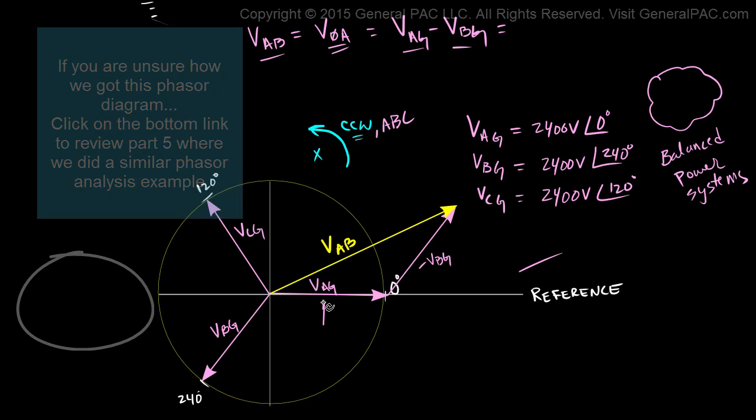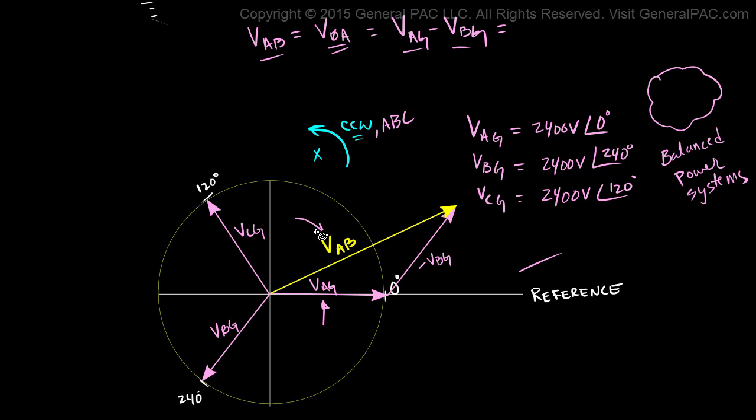Now that we have this visual representation, if we were to relate Vag to Vab, what would we have to do? We would have to shift Vag by 30 degrees in the counter-clockwise direction. And then we would have to multiply it or stretch it by 1.73 or the square root of 3 so it lines up with Vab.